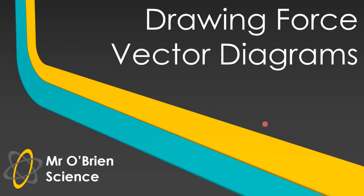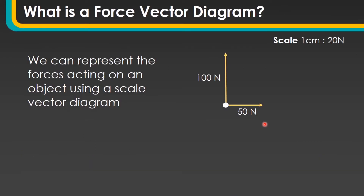Just to make sure that we understand firstly what a force vector diagram is: we can represent the forces acting on an object using a scale diagram. As you can see from this diagram on the right, there's a 100 newton force acting upwards on an object and a 50 newton force acting to the right.